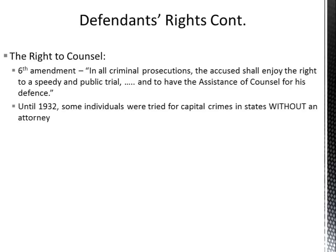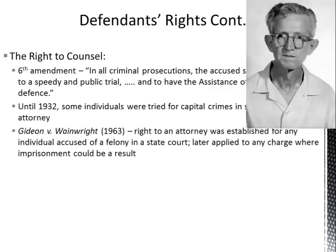Through the incorporation doctrine, until 1932 some individuals were tried for capital crimes in states without an attorney. A capital crime is one that can be followed by the death penalty. Gideon v. Wainwright in 1963 established the right to an attorney for any individual accused of a felony in a state court. This was later applied to any charge where imprisonment could result. So if you commit a crime and could go to jail, you are automatically guaranteed an attorney if you can't afford one.